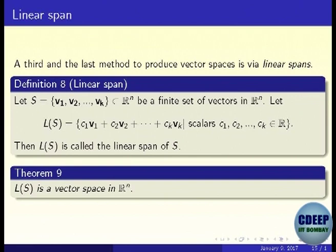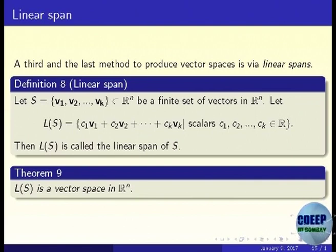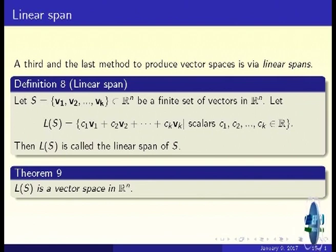To see why the linear span is a vector space: if V = C₁V₁+...+CkVk and W = C₁'V₁+...+Ck'Vk are in the span, then V+W = (C₁+C₁')V₁+...+(Ck+Ck')Vk is also in the span. Likewise, λV is in the span. So it is indeed a vector space. Remark: every vector space is a linear span, just as every vector space is a null space or range space — these things will be clear very soon.